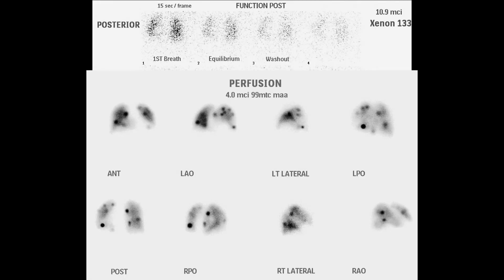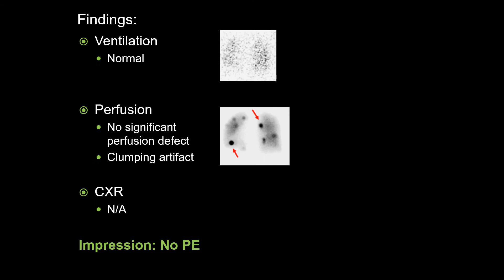In this case, xenon ventilation images are displayed at the top with perfusion images below. There is no comparison chest radiograph. Take some time to formulate an opinion. There are no significant ventilation defects on this somewhat limited ventilation exam. There are multiple foci of abnormal increased uptake scattered throughout the lungs on the perfusion exam. These are consistent with artifacts secondary to MAA clumping. No significant mismatched perfusion defects are identified. Despite the presence of clumping artifact, the constellation of imaging findings classify this exam as no PE.